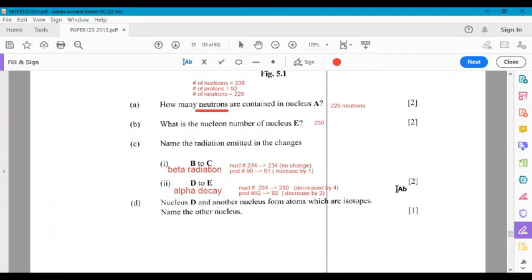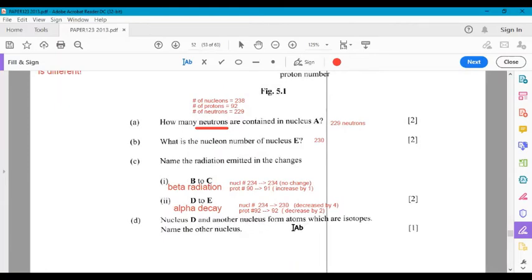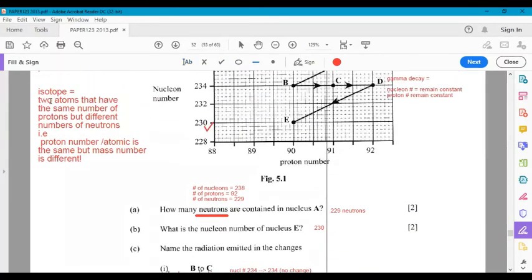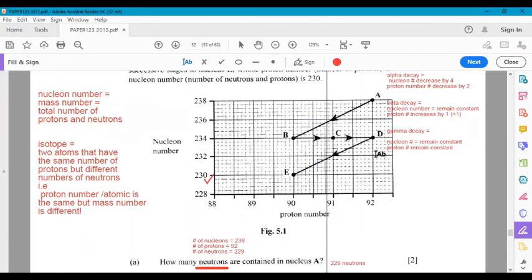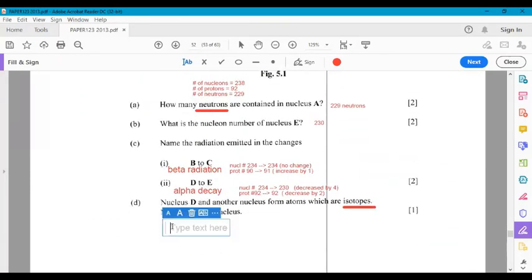And last question for this video. Nucleus D and another nucleus form atoms, which are isotopes. Remember what the word isotope means. Isotopes are two atoms that have the same number of protons, but different numbers of neutrons. So the proton number is the same. So on this graph, we're looking for another atom, so A, B, C, D, or E, that has the same number of protons, same proton number as D, which one fits that description. D has a proton number of 92. And the only other atom that has that proton number as well is atom A. So that is our isotope. So atom D and A are isotopes.